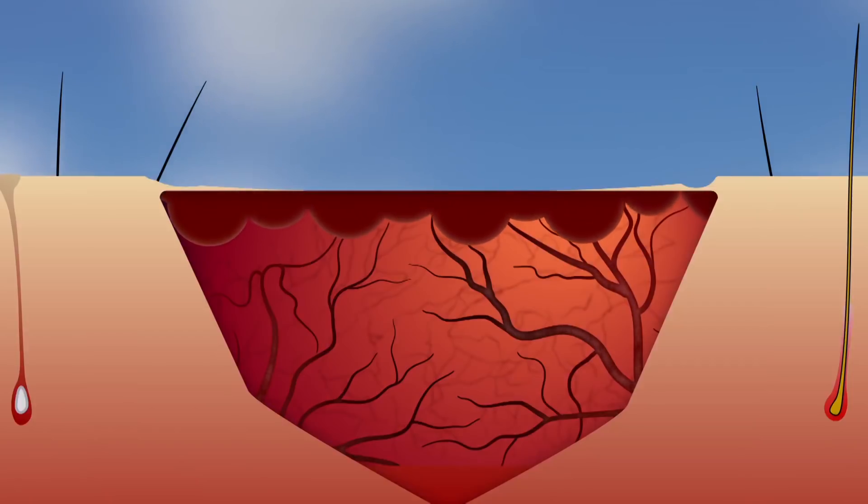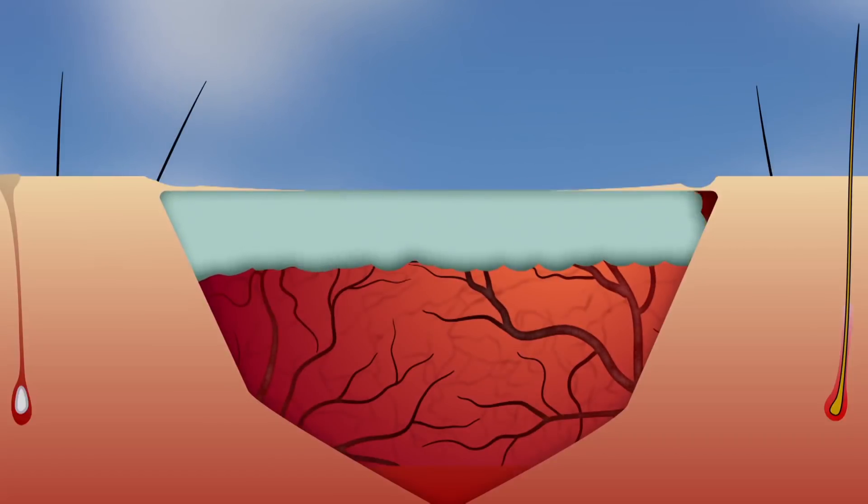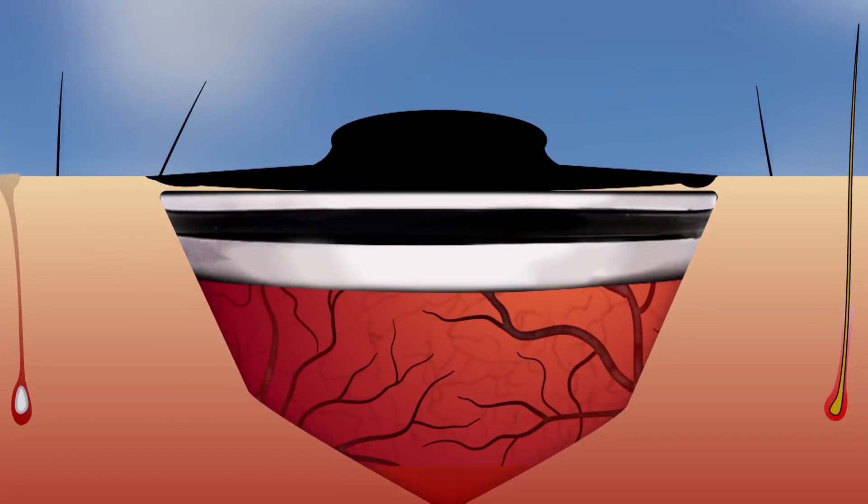If you cut your skin, lots of tiny blood vessels tear and bleed. But straight to the rescue are an army of platelets. They stick together like glue. This is called clotting, and it makes a plug to stop the bleeding.